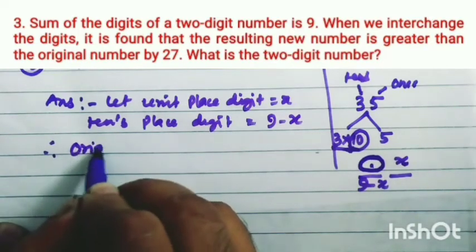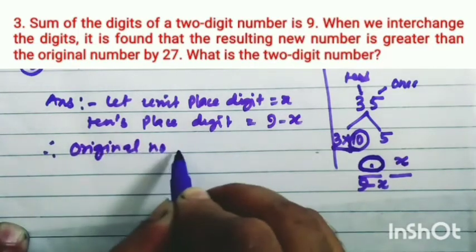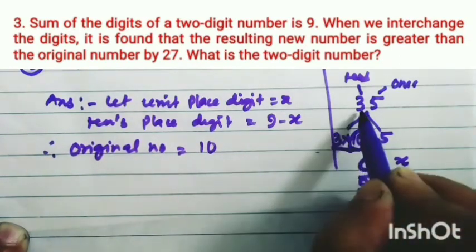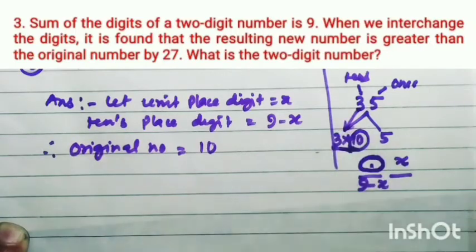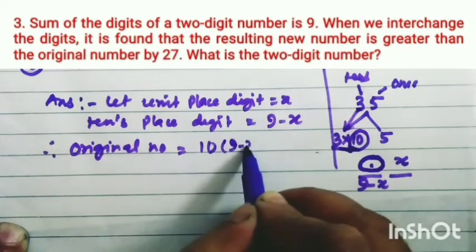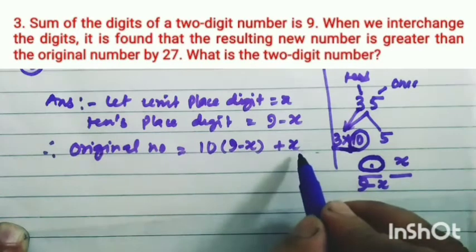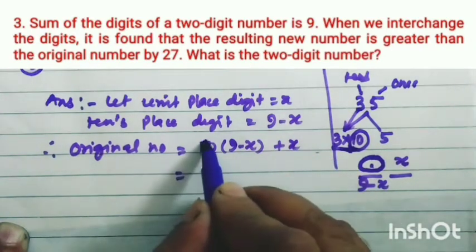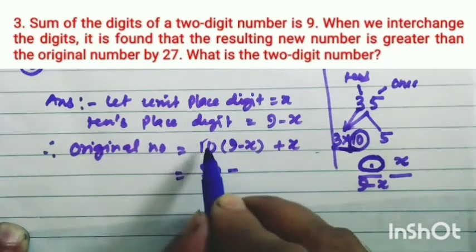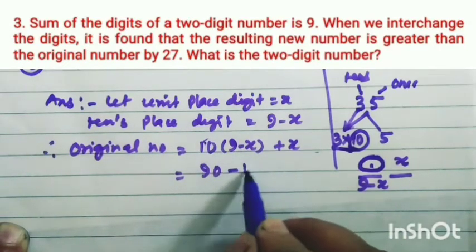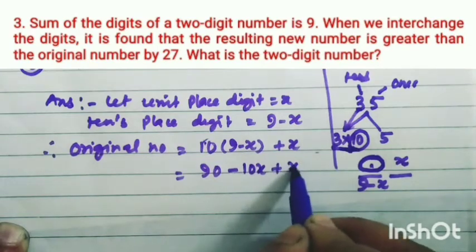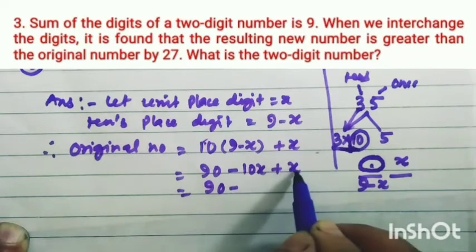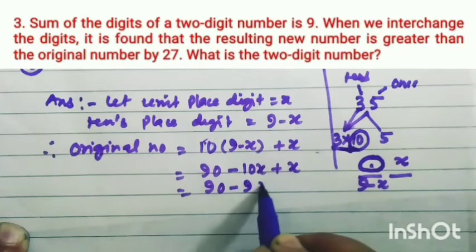Therefore, the original number equals 10 into (9 minus x) plus x, which equals 90 minus 10x plus x, equal to 90 minus 9x.